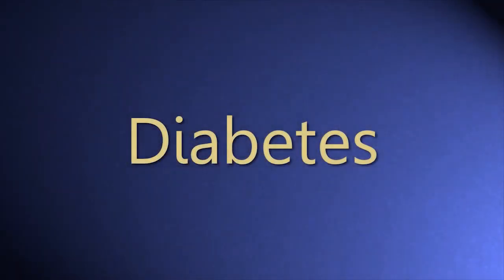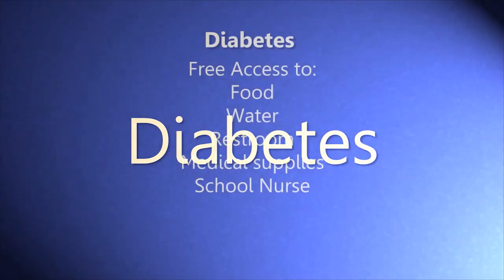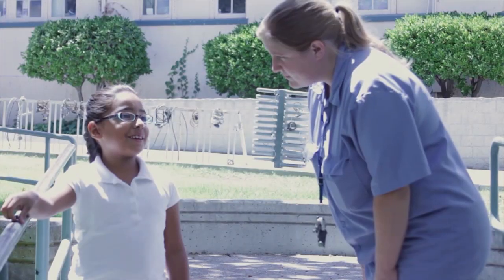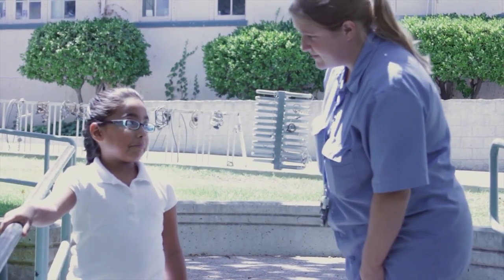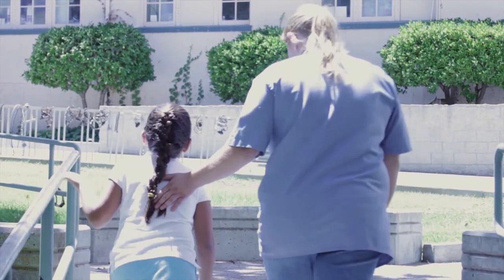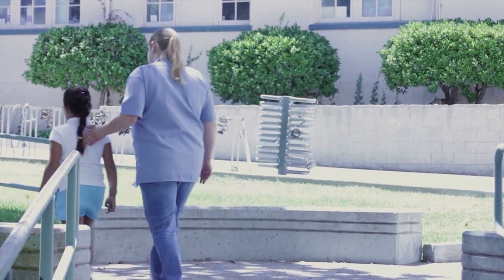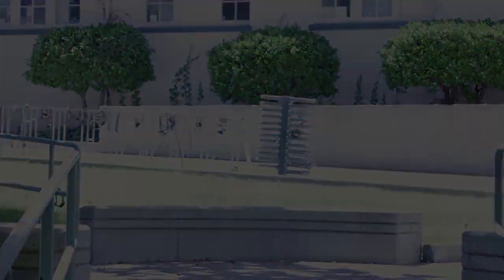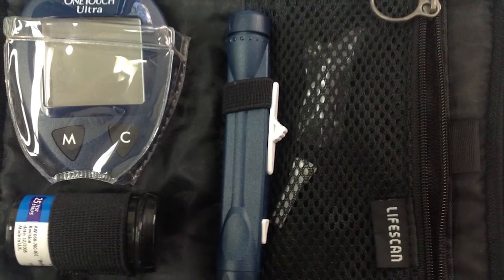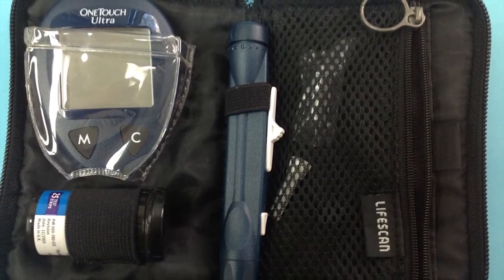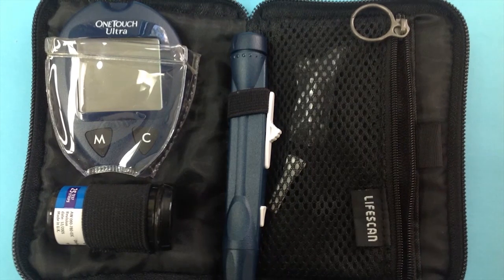Diabetes is a metabolic disease where the body fails to produce enough insulin or the cells fail to respond to insulin properly. Students with diabetes must check their blood sugar frequently and have free access to food, water, restroom, and medical supplies. During the school day, a student with diabetes may experience high or low blood sugar levels. If a student feels symptoms, they should test their blood sugar right away. Most students keep a blood sugar testing kit on them and one in the office for backup.